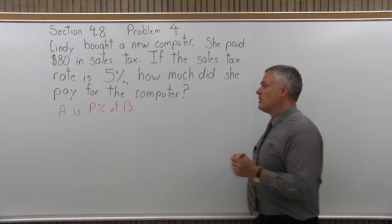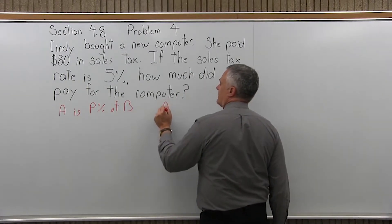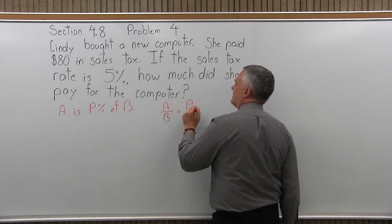And if I can write it in that form, that means I can use this formula that I like, which is A over B equals P over 100.